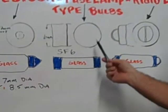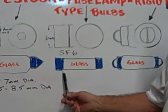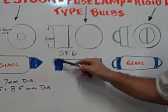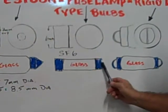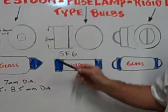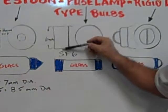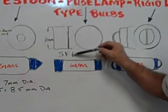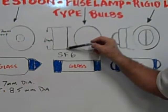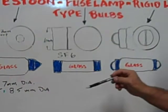The Fuse Lamp type is a straight tube and has flat ends on either end of the tube lamp. It's 6mm for the SV6 across the diameter of the end cap.